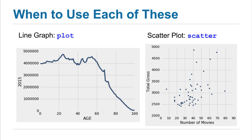In such a situation where you have one variable — in this case age — and for every value of that, one value of another — in this case population — and your first variable is ordered, then you can draw the dots and join them up, and you'll get a line graph, and it makes sense.